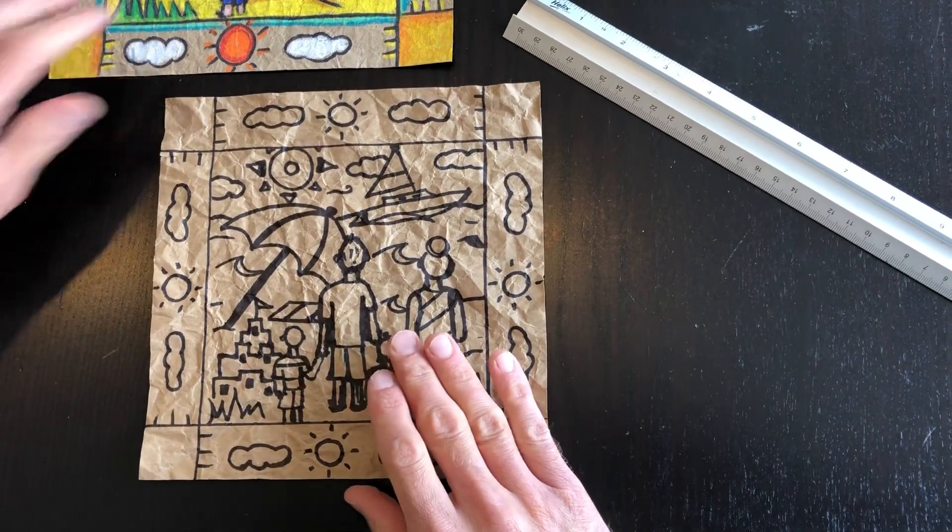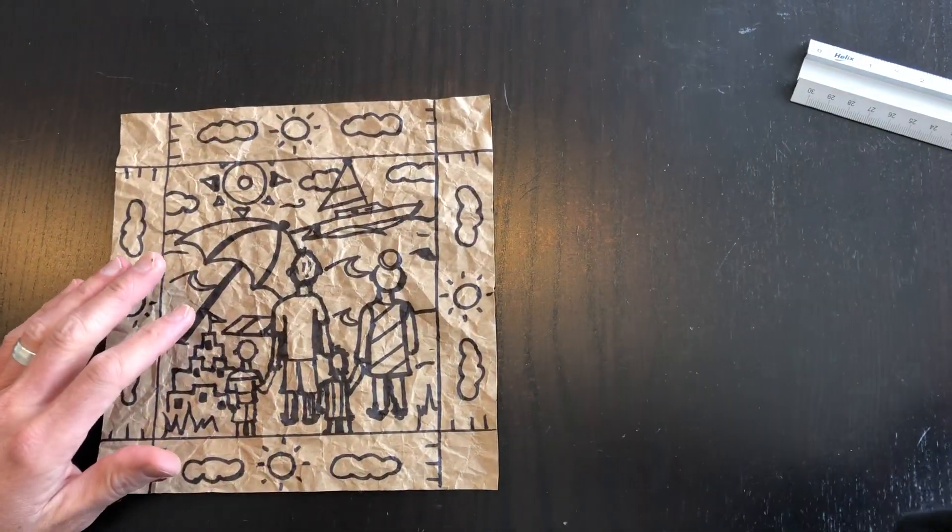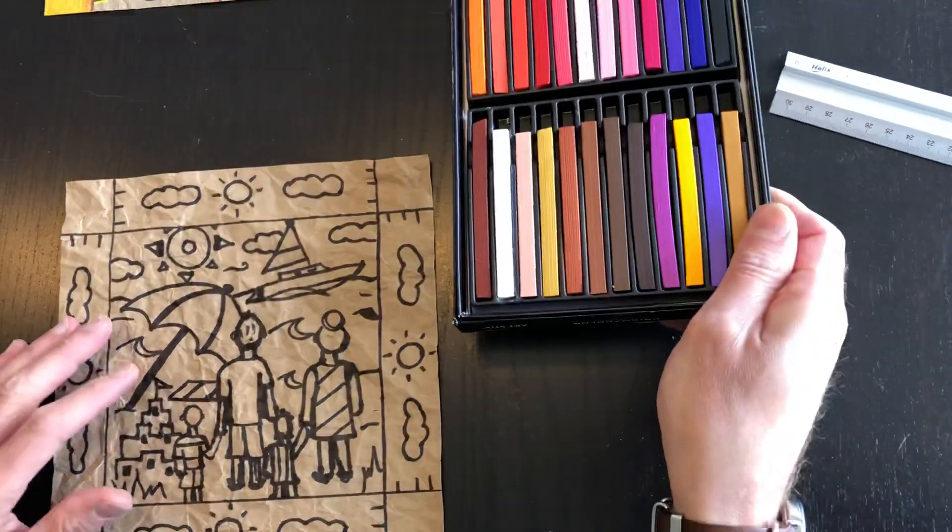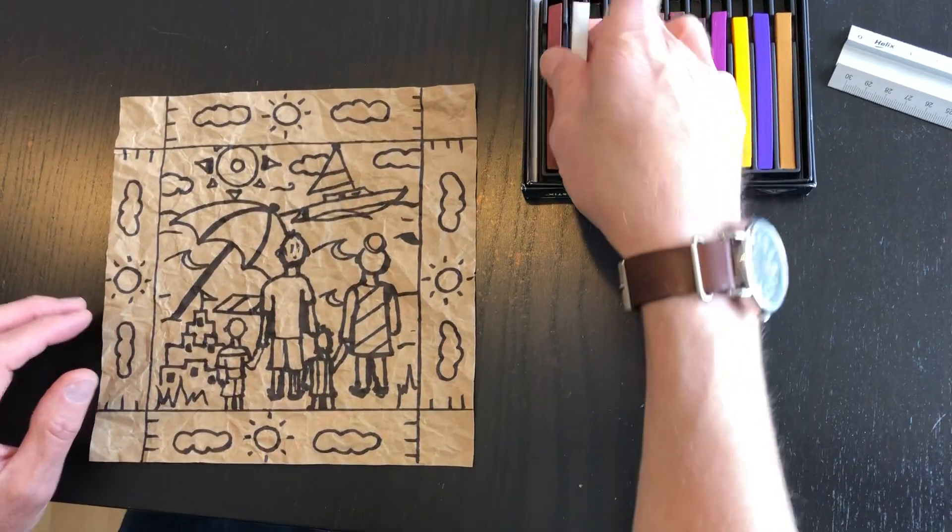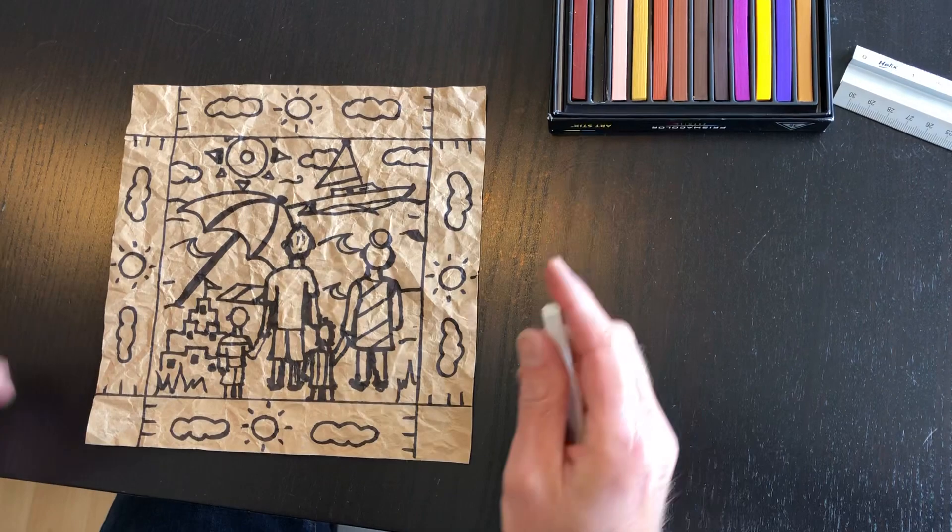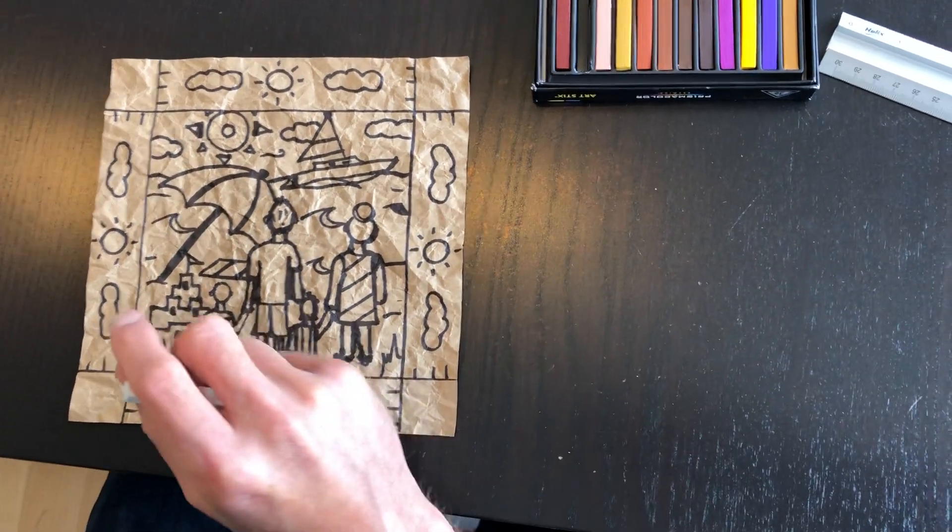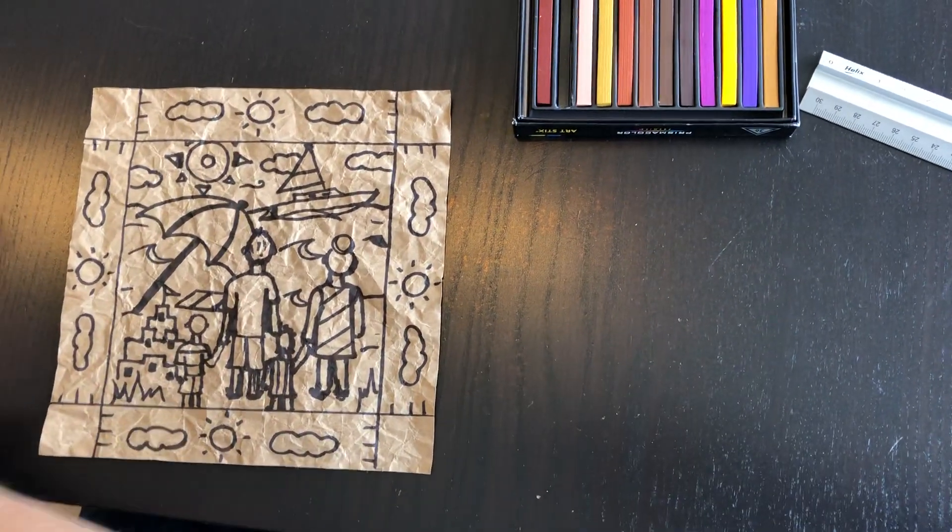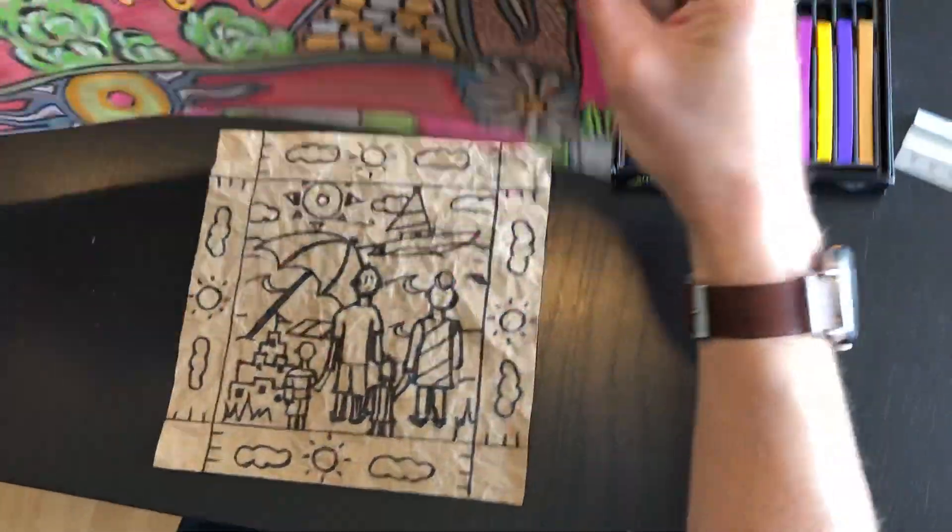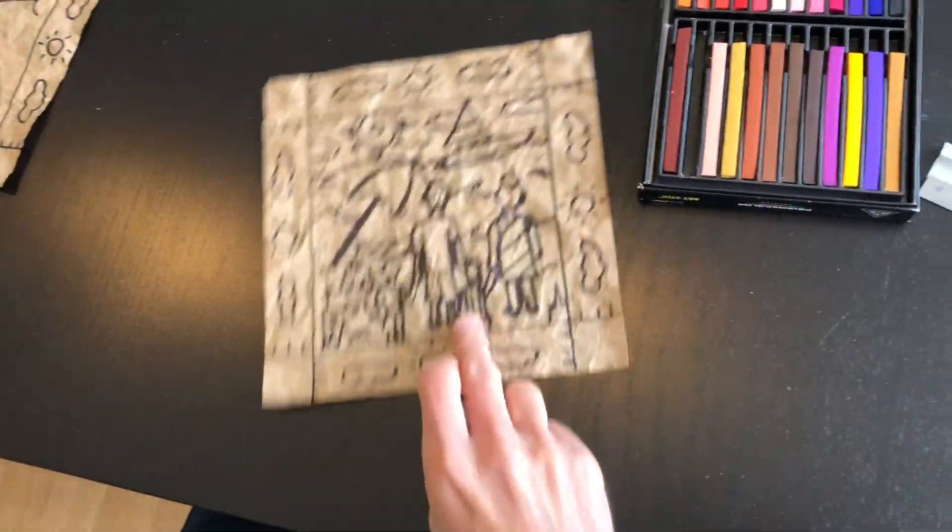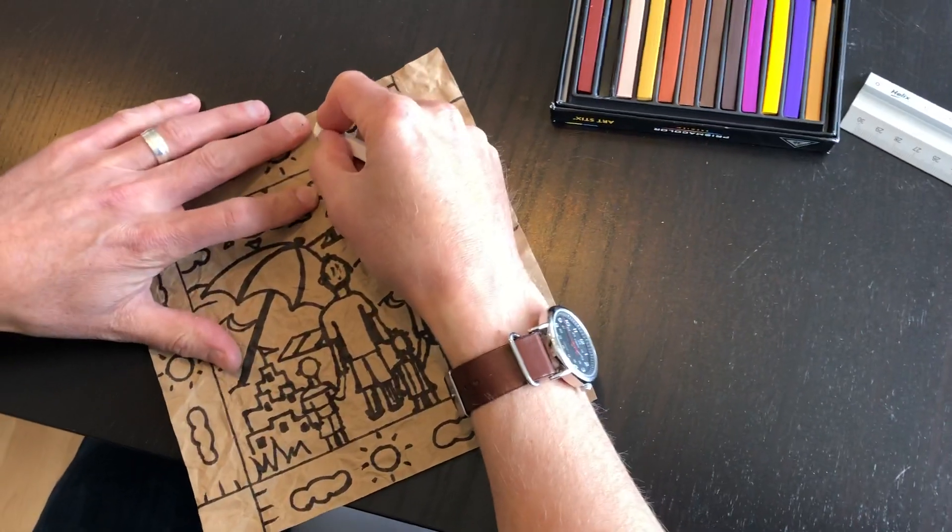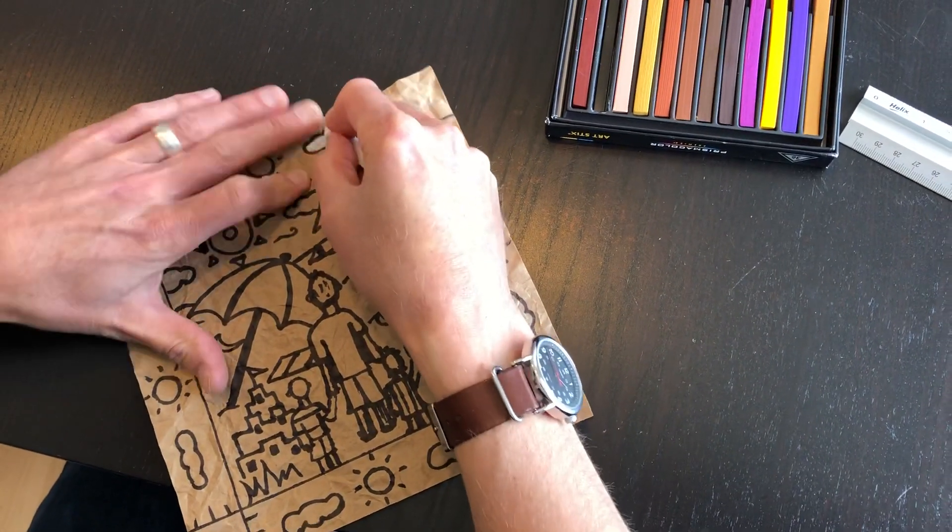When I color this, I'm using color sticks like we use or art sticks that we use at school. You could do crayon, marker, or even paint. This is a painted one. So use whatever materials you have. I'm going to do mine with color stick.